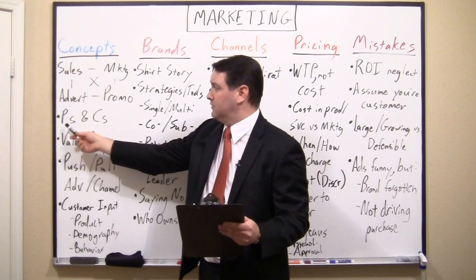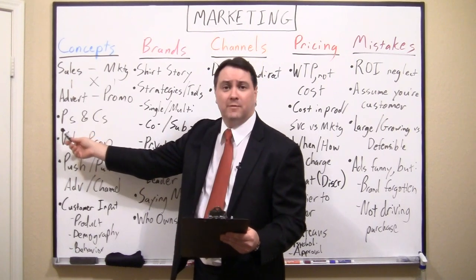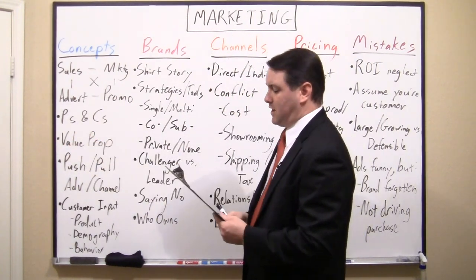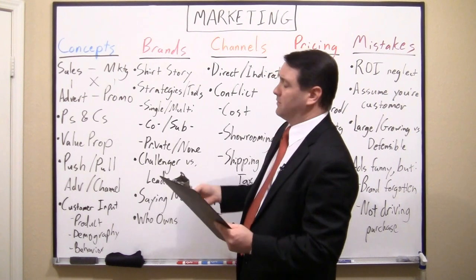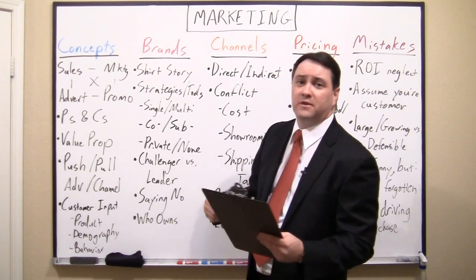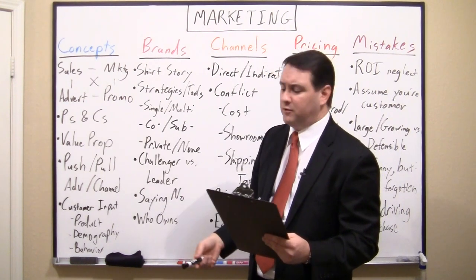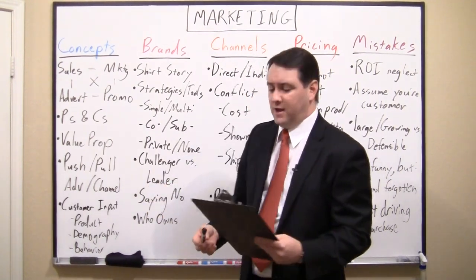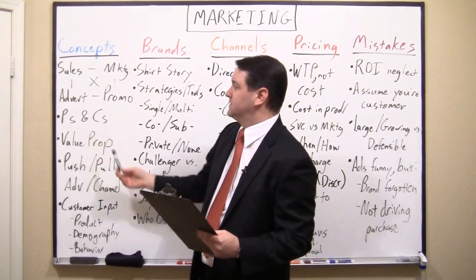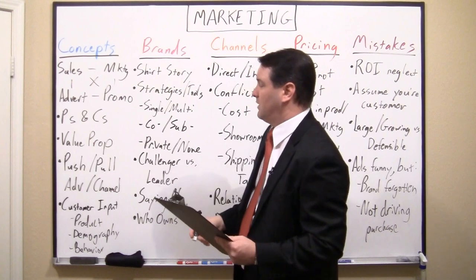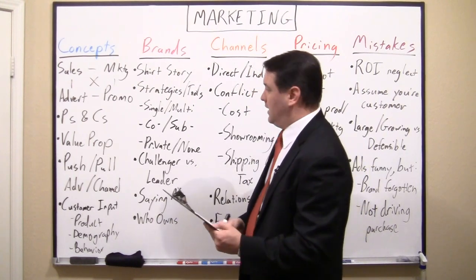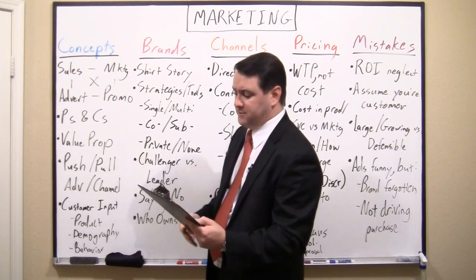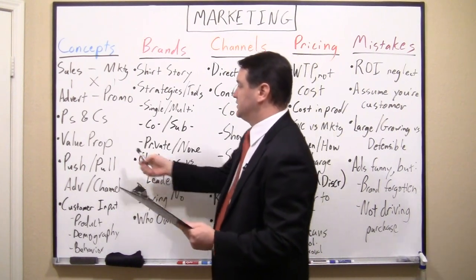In a regular training session I talk about the P's and the C's — these are textbook models. The P's are things like product, price, and promotion; the C's are things like channel and customer. They're basically a way of listing all topics relevant to marketing. I like to emphasize more the value proposition.